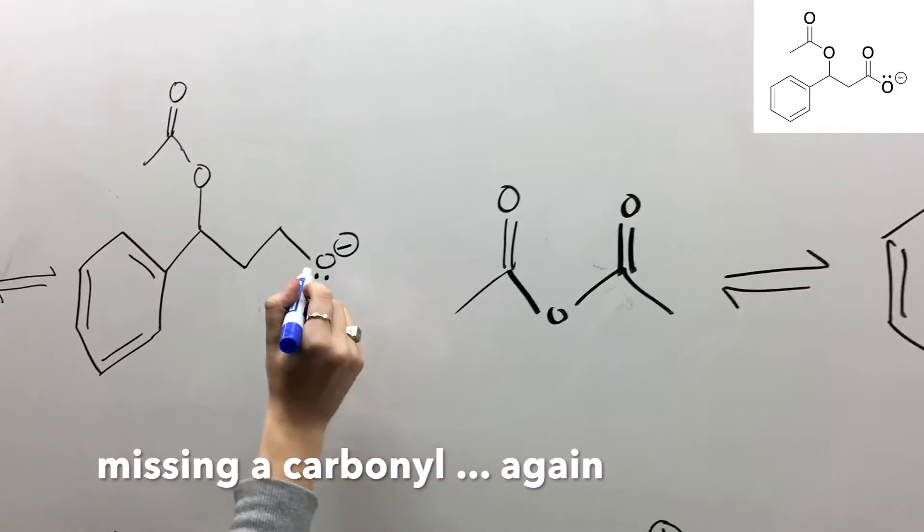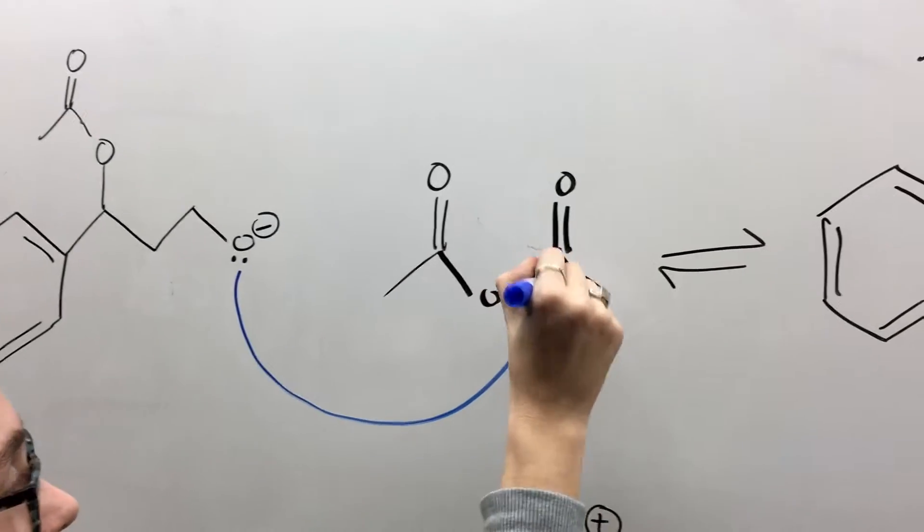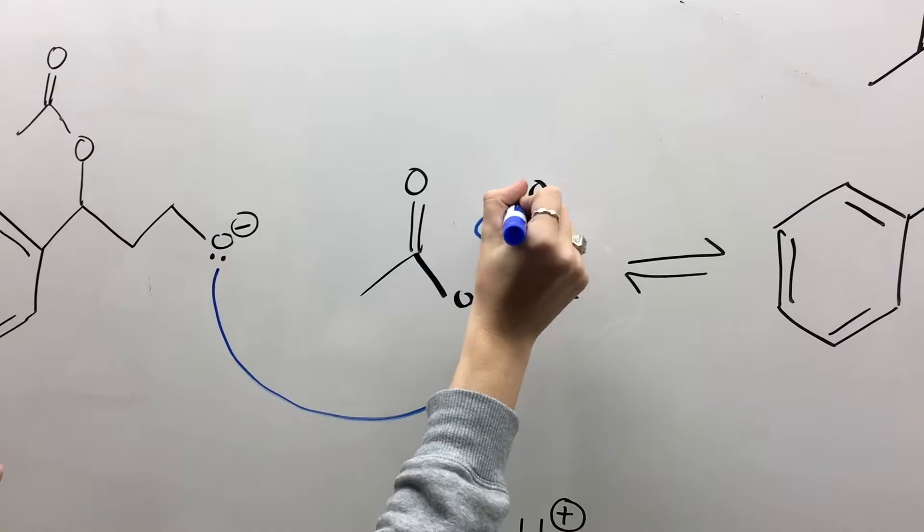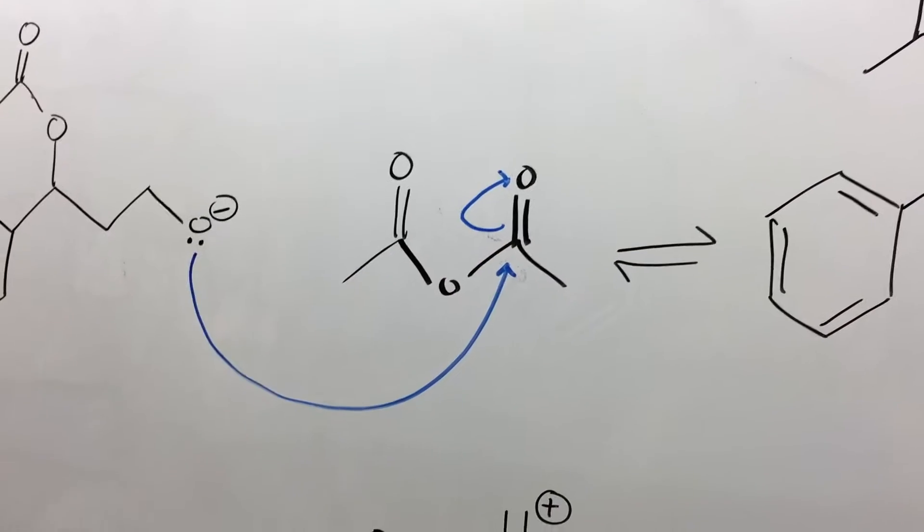With this lone pair, it will attack the carbonyl carbon, swinging the electrons from the double bond up onto the oxygen.